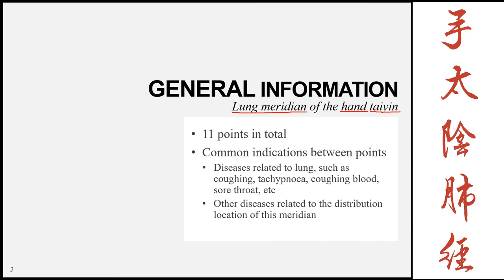Of the three Yin meridian types — Tai Yin, Shao Yin, and Zhu Yin — the Tai Yin runs the most anterior of the three, so it's going to be on the anterior and medial aspect of the arm. Finally, thinking back to the interior-exterior relationship of the meridians, the partner to the lung meridian is the large intestine meridian, which also assists in understanding some of the functions of this meridian.